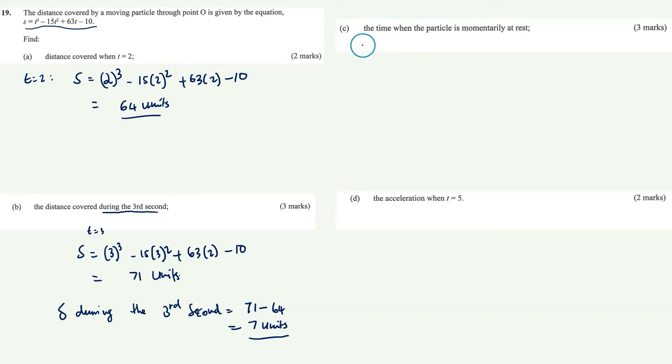Now for part C, we're asked to find the time when the particle is momentarily at rest. Momentarily at rest means it's not moving, which means speed equals 0. We need to use this information to find time. What connects distance, time, and speed? We can use the formula for speed.